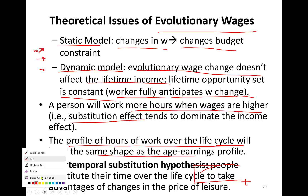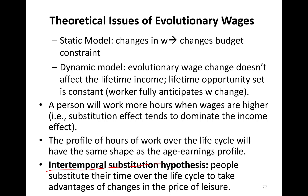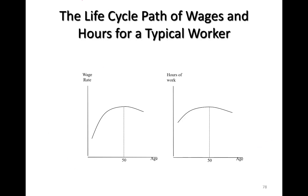I'd like to talk about the intertemporal substitution hypothesis. It says people substitute their time over the life cycle to take advantage of changes in the price of leisure. Whenever wages are higher, I am going to work more and substitute away from leisure — substituting across time periods, which is what intertemporal substitution means. So this is the life cycle path of wages and hours of work of a typical worker. Age is on the x-axis, wage rate on the y-axis. Wages go up when you're younger, peak at 50, then go down. Hours of work behaves the same way — we work hardest at age 50 and then slowly decline.